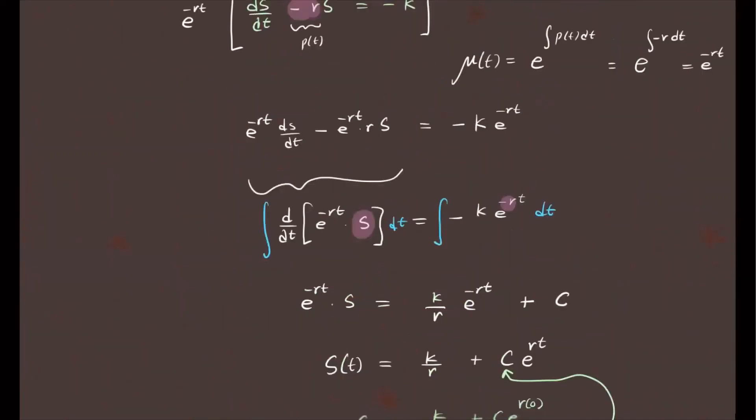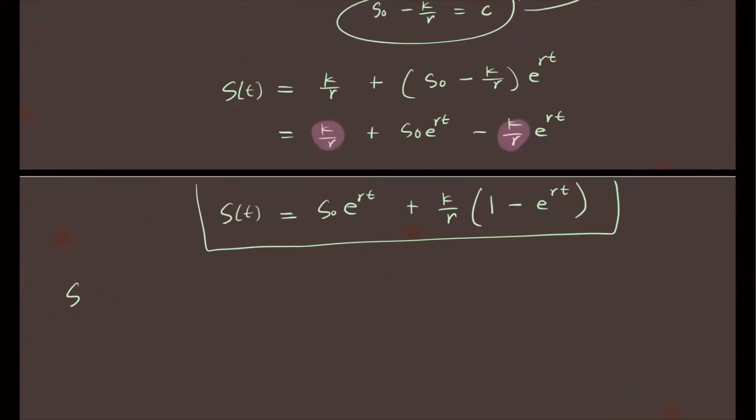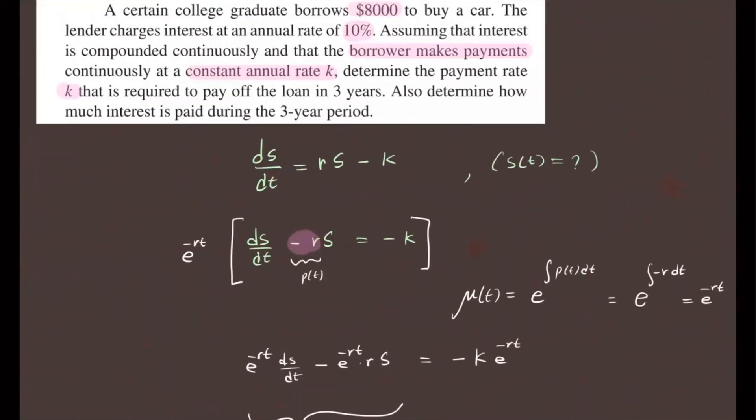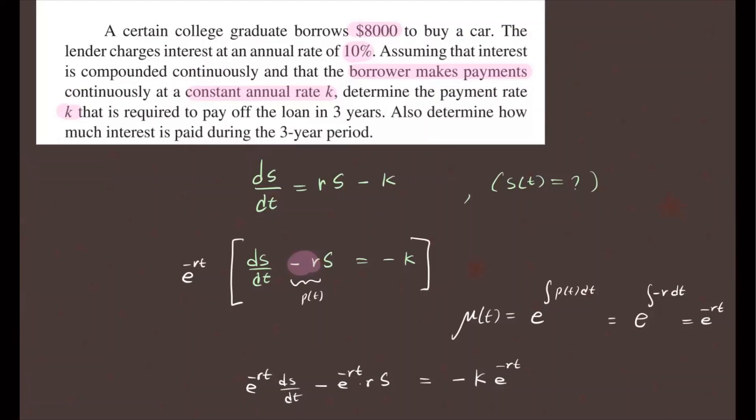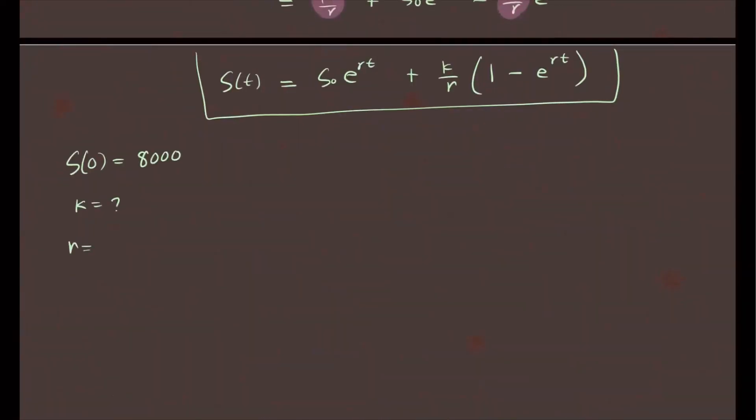So we know we're trying to figure out K. You're borrowing $8,000, so when time is 0, you're starting with $8,000. So our S of 0 is going to be $8,000. We're looking for K, how much should this person pay every year? We also know that the rate the lender is charging is 10%. We want to know how much you need to pay so that you can pay off the loan in three years. So the rate is 10%, which is 0.10, and we want to pay off the loan, so the balance in three years should be zero. That's what that means.